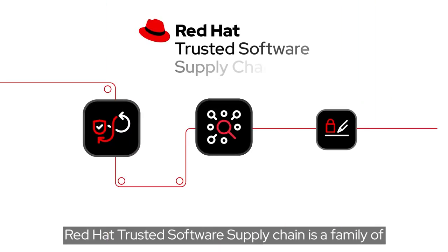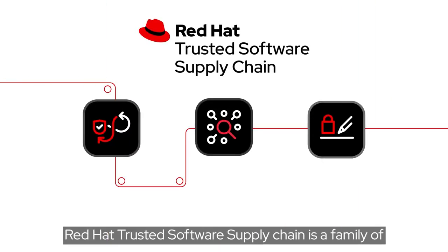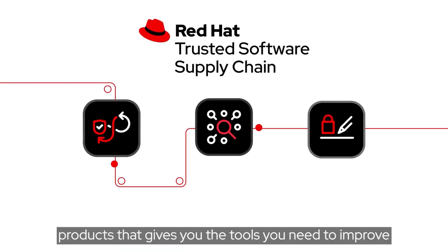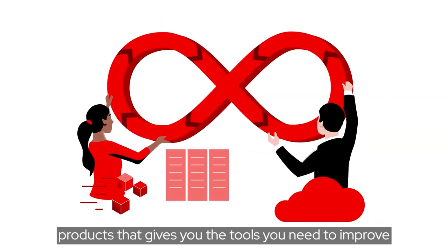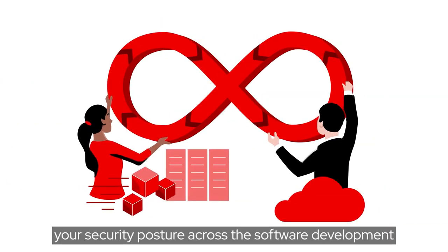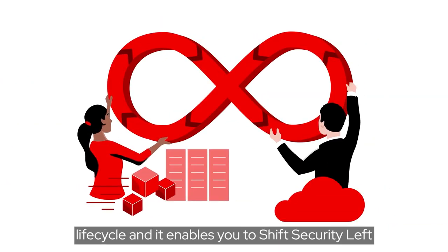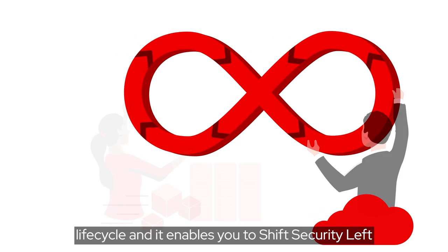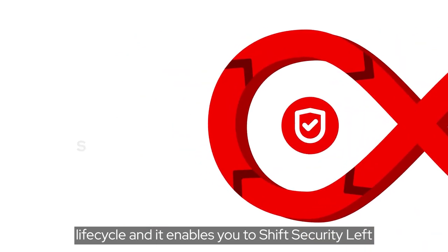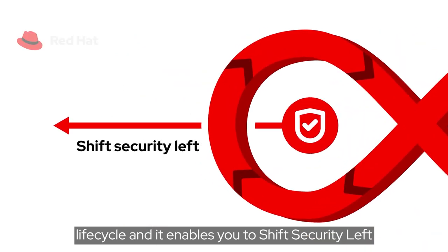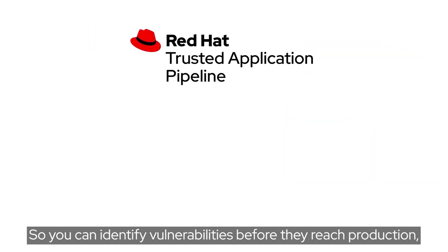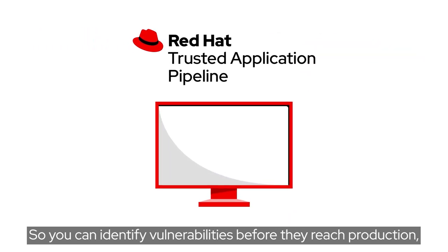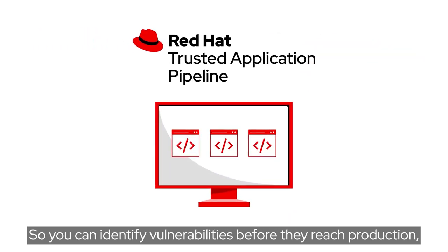Red Hat Trusted Software Supply Chain is a family of products that gives you the tools you need to improve your security posture across the software development lifecycle. It enables you to shift security left with Red Hat Trusted Application Pipeline, so you can identify vulnerabilities before they reach production.